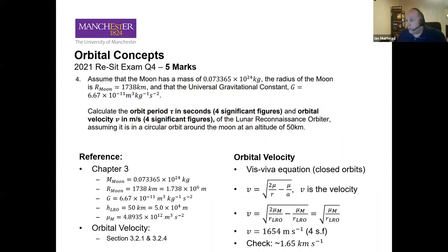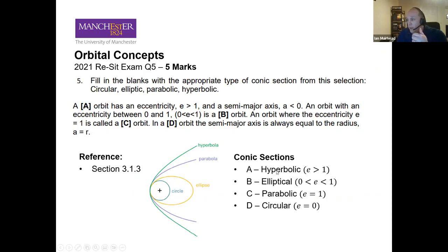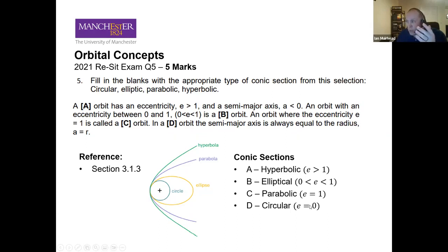Question five, worth five marks, asks you to match eccentricity values to orbit types. A circular orbit has eccentricity e = 0; an elliptical orbit has 0 < e < 1; a parabolic orbit has e = 1; a hyperbolic orbit has e > 1. That's a quick five marks if you know the four orbit types.